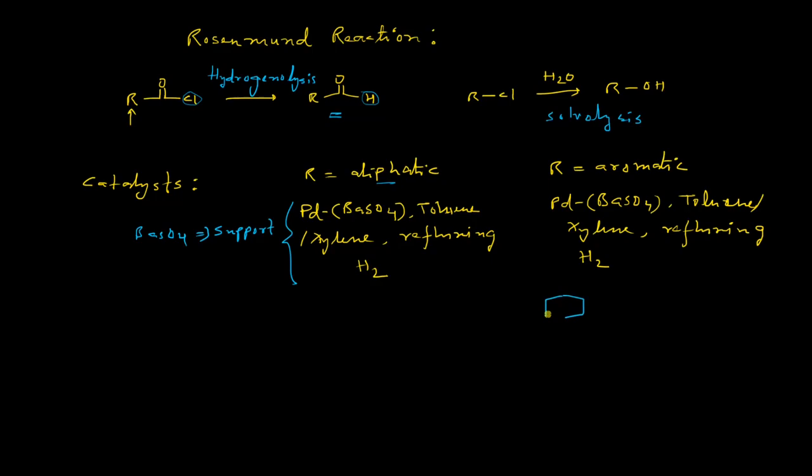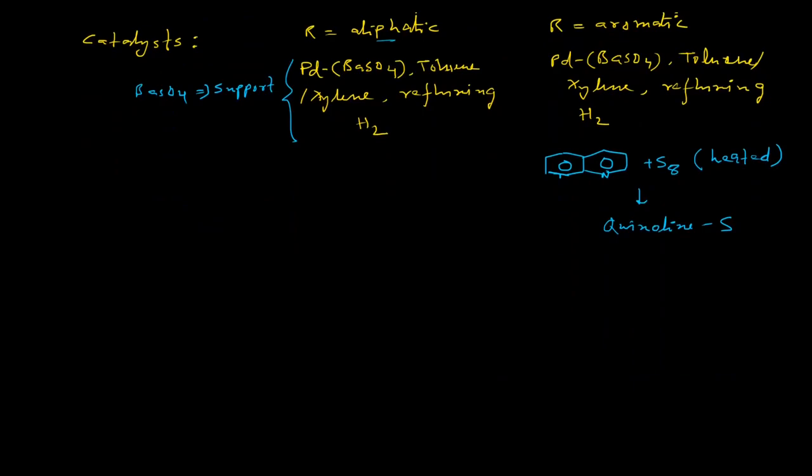Famous catalyst poison for Rosenmund reaction is quinoline-S. This quinoline-S is basically prepared in situ when quinoline is taken with elemental sulphur and the reaction medium is heated, and this results in the formation of quinoline-S. Other modifiers are, for example, thiourea. Especially when tetramethyl thiourea is taken, the reaction was found to be very efficient. These three are basically famous modifiers or deactivators or catalyst poisons during Rosenmund reaction.